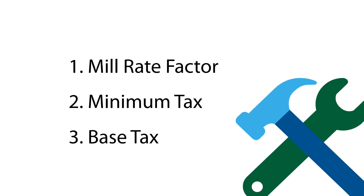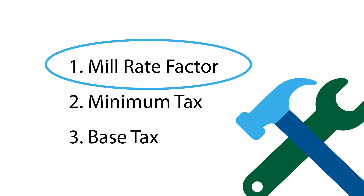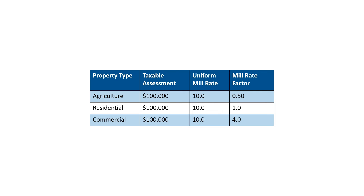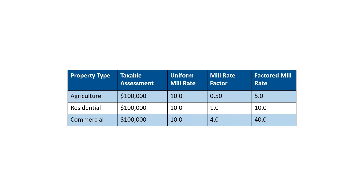Municipalities often use the mill rate factor to distribute the tax burden among property classes. For example, let's say a municipality has a mill rate factor of 0.5 for agricultural properties, 1 for residential properties, and 4 for commercial and industrial properties. The mill rate factor is then multiplied with the mill rate to determine factored mill rates used to levy a municipal property tax. Therefore, agricultural properties will be levied a factored mill rate of 5, residential will be levied a factored mill rate of 10, and commercial and industrial properties will have a factored mill rate of 40.